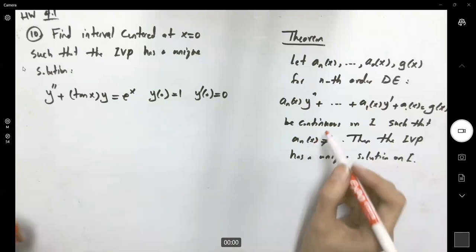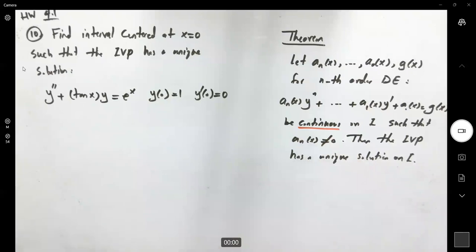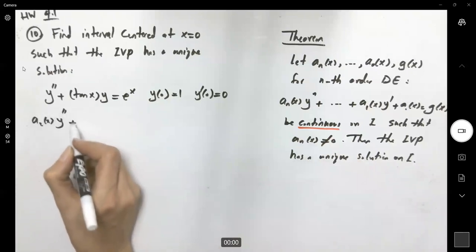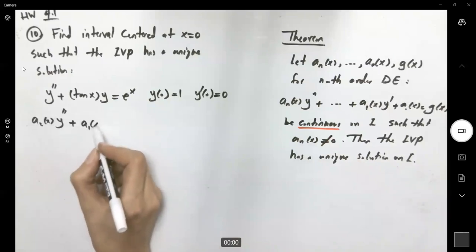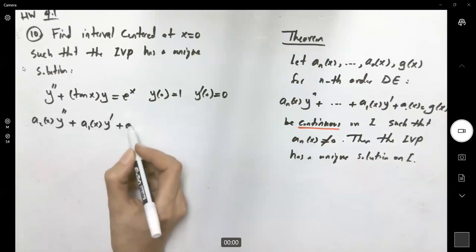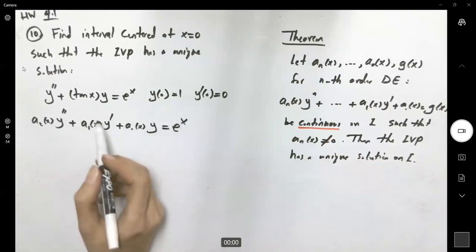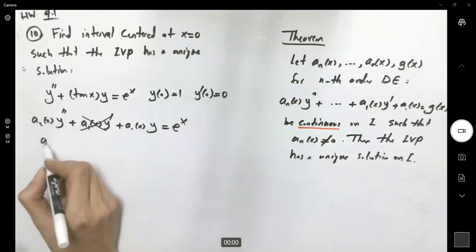What do we have here? We have a₂(x) = 1 for the second derivative of y, a₁(x) = 0, and a₀(x) = tan(x), with the right side equal to e^x.